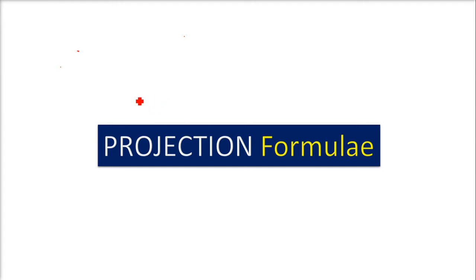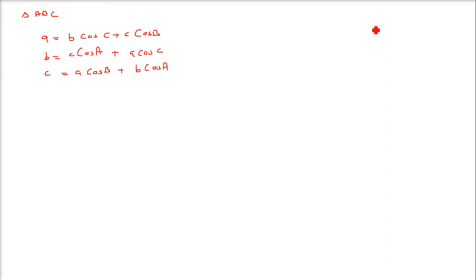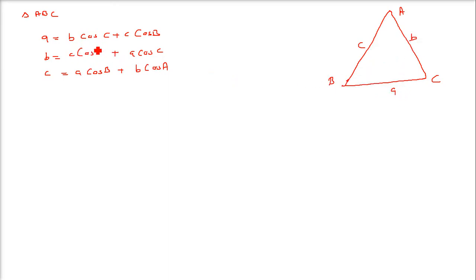The projection formula in sine and cosine and their application — we generally use this projection formula in any triangle ABC. We have a as b cosC plus c cosB, and b as c cosA plus a cosC, and c as a cosB plus b cosA. It means that if there is a triangle ABC with sides labeled C, B, and A, then this holds as a projection formula.